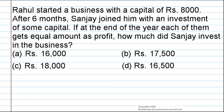Rahul started a business with a capital of 8,000 rupees. After six months, Sanjay joined him with an investment of some capital. If at the end of the year each of them gets an equal amount as profit, how much did Sanjay invest in the business? The options are 16,000 rupees, 17,500 rupees, 18,000 rupees, or 16,500 rupees.